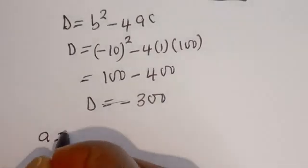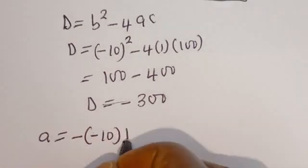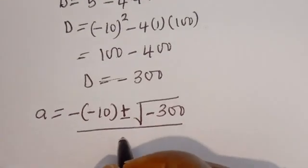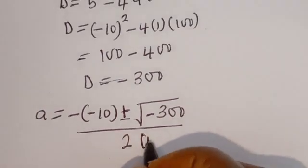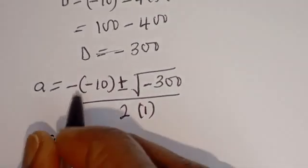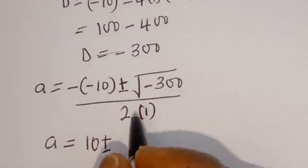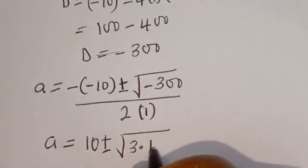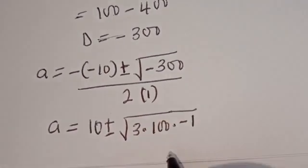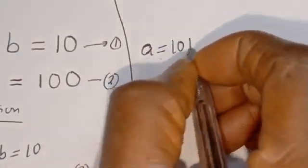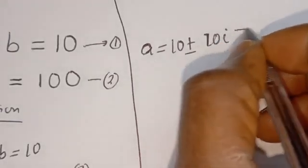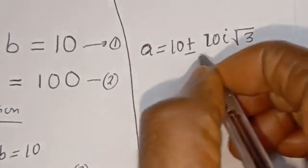Plugging this in, we have a equals negative bracket negative 10 plus or minus square root of negative 300, divided by 2 multiplied by 1. This simplifies to a equals 10 plus or minus square root of negative 300. The square root of negative 300 can be written as square root of 3 multiplied by 100 multiplied by negative 1, which is 10i root 3.